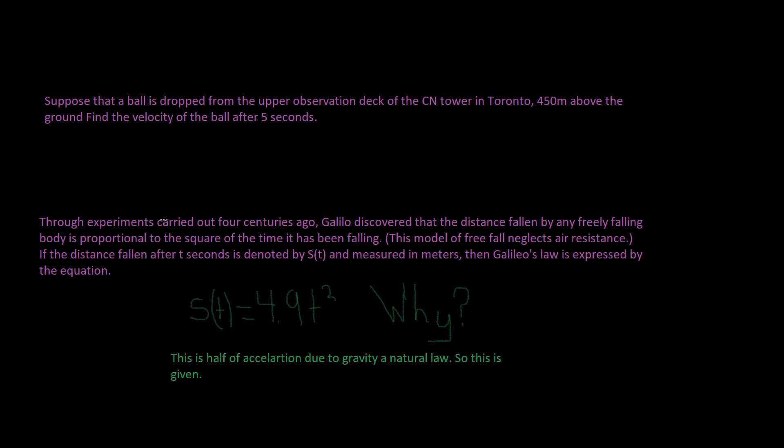And we need a little background first. Through experiments carried out four centuries ago, Galileo discovered that the distance fallen by any freely falling body is proportional to the square of the time it has been falling. This model for free falling neglects air resistance. If the distance fallen after t seconds is denoted by s(t), and measured in meters, then Galileo's law is expressed by this equation.